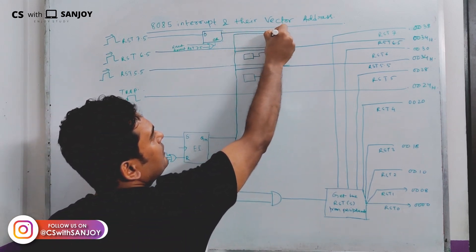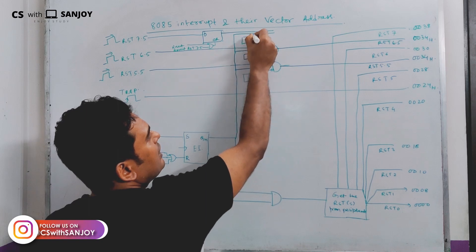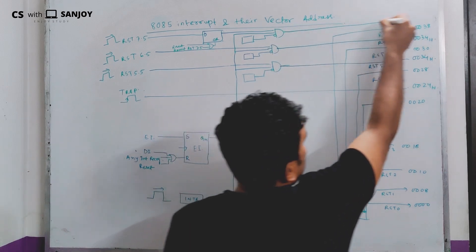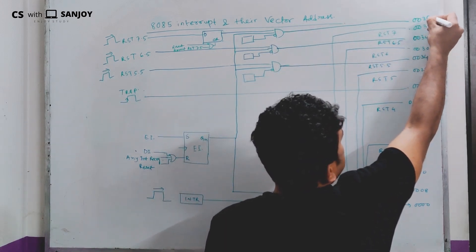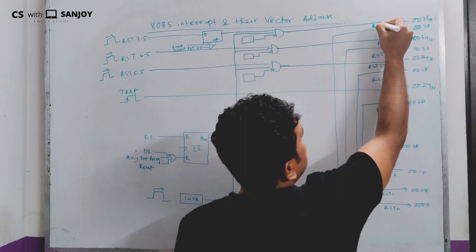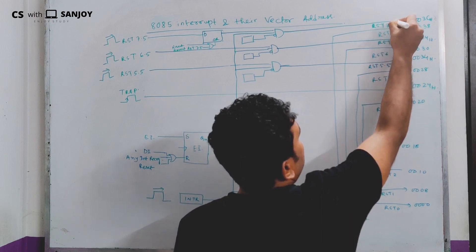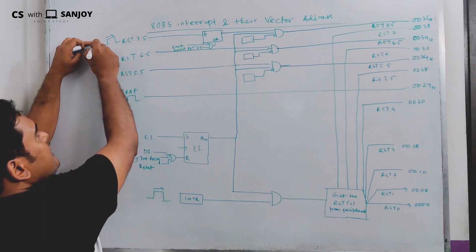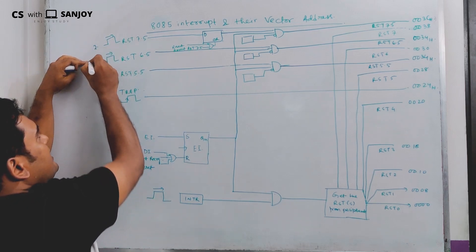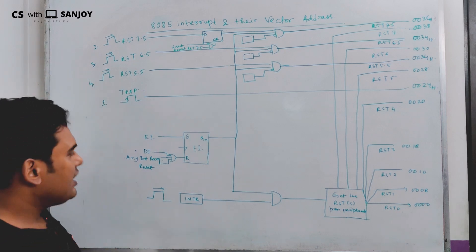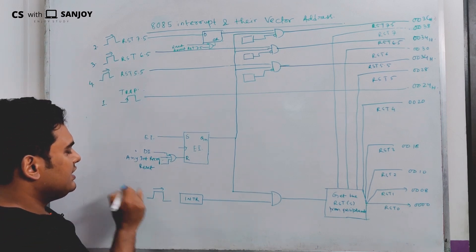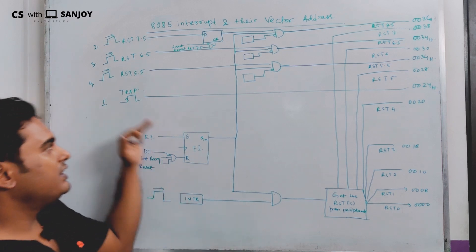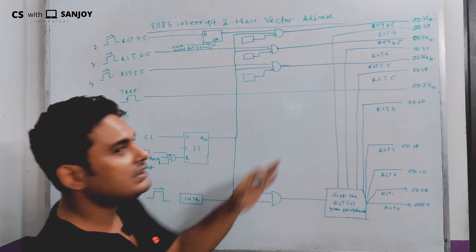There should be an enable interrupt, and also there should be a mask bit. Finally, RST 7.5 goes to location 003CH. RST 7.5 has the highest priority among the maskable interrupts, followed by RST 6.5, then RST 5.5, and finally INTR has the lowest priority.